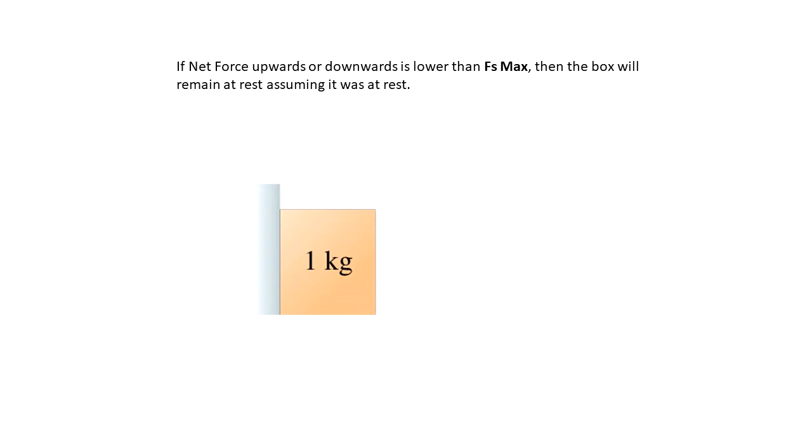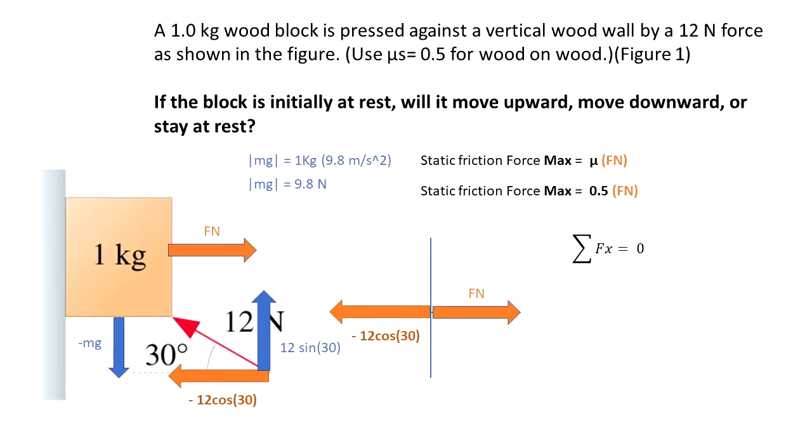So first, it is important to calculate the fs max. Both x forces in the Cartesian plane are together and this has to be equal to 0. The summation of the forces in the x has to be equal to 0 because the acceleration in the x direction is equal to 0.